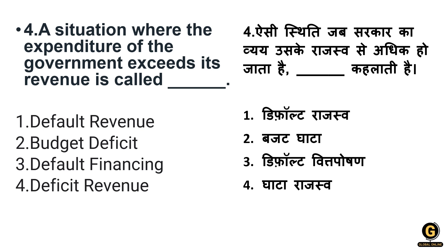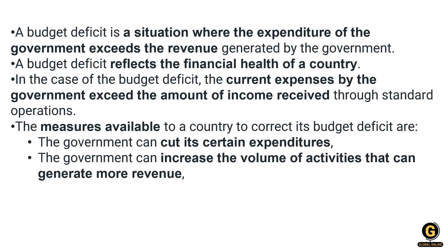Question four: a situation where the expenditure of the government exceeds its revenue is called what? Options are default, revenue budget deficit, default financing, or deficient revenue. The correct answer is option B: budget deficit. A budget deficit is a situation where government expenditure exceeds the revenue generated by the government. A budget deficit reflects the financial health of the country. To correct a budget deficit, the government can cut certain expenditures or increase volume of activities that generate more revenue.